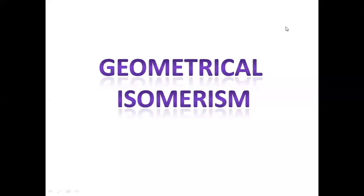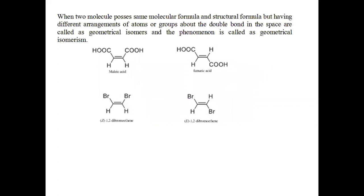Hello students, this is the fourth part of stereochemistry and in this part we will discuss about geometrical isomerism. When two molecules possess the same molecular formula and structural formula but have different arrangements of atoms or groups about the double bond in space, they are called geometrical isomers and the phenomenon is called geometrical isomerism.